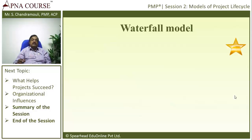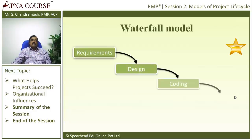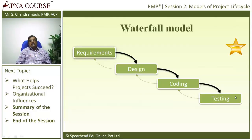The most famous project life cycle model is called the Waterfall Model. As the name indicates, just as water flows from top to bottom, we move from requirement to design, design to coding, and coding to testing. You need to understand that water will not flow from the bottom level back to the top level — that is the essence of this model.